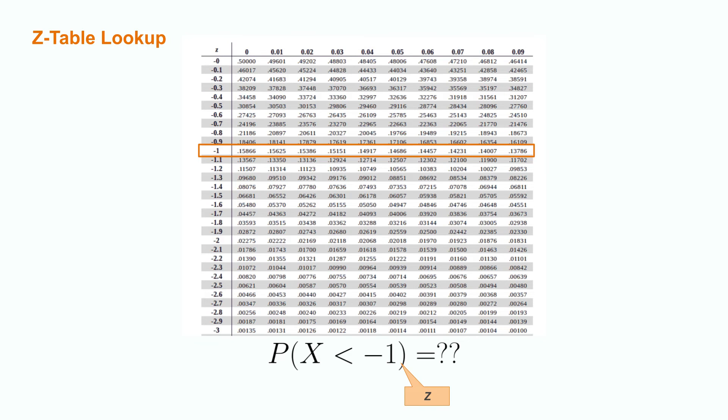To find the cumulative probability from negative infinity up to our critical z value, we find the row that refers to negative 1 all the way to the tenths place, and then the column that has 0 in the thousandths place. This gives us a value of approximately 0.159 for the cumulative probability that x is less than negative 1. For any value of z, including positive values, such a table will provide the cumulative probability that x is less than that value.